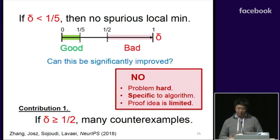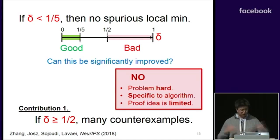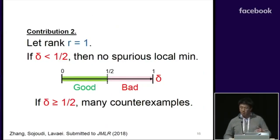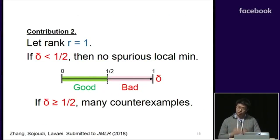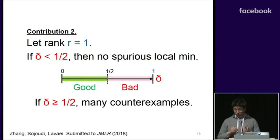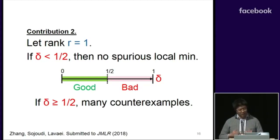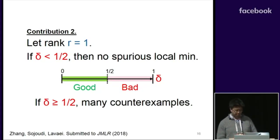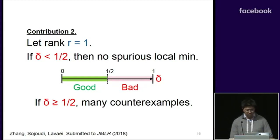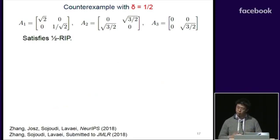We show that beyond a value of one-half, there exist numerous counterexamples. Furthermore, in the journal version of this paper, we give the first sharp guarantee that if your RIP constant is less than one-half, then in the rank-one case, we guarantee no spurious local minimum.